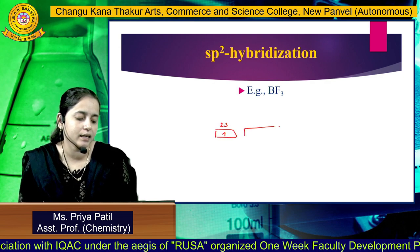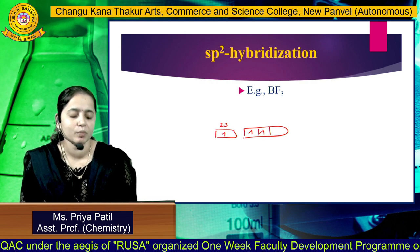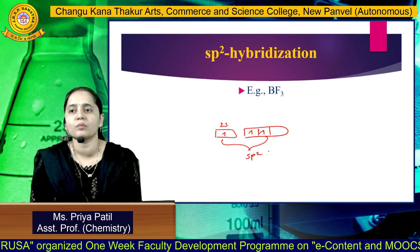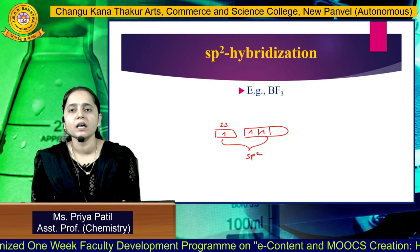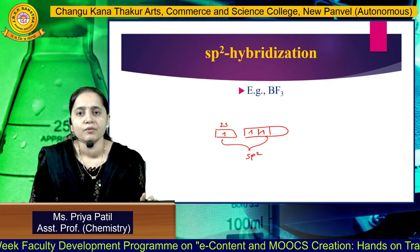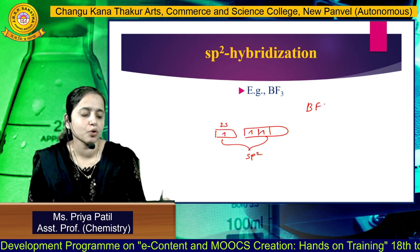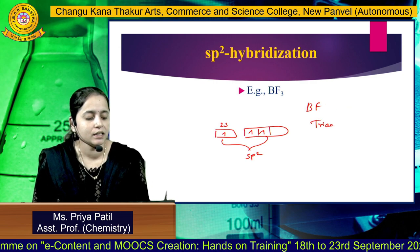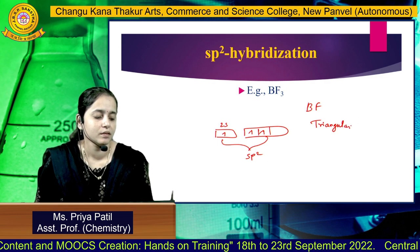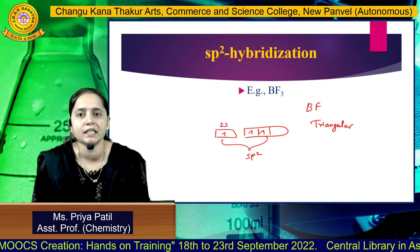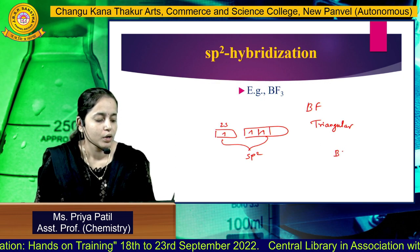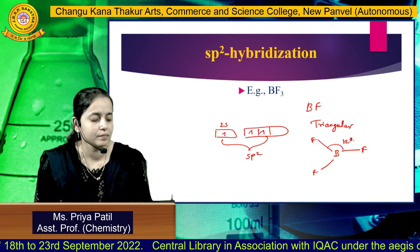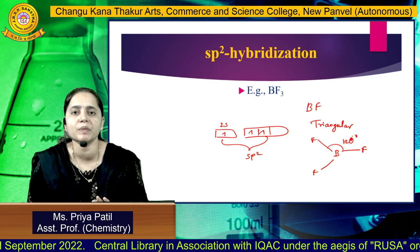One electron is present in 2S and 2 electrons are present in the P orbital. These 3 orbitals get mixed and form SP2 hybrid orbitals. These 3 hybrid orbitals get overlapped with 1 electron each from the 3 fluorine atoms. BF3 will show a triangular planar shape as it has SP2 hybridization, and all 3 bonds are equilateral, showing a 120-degree angle between them. This is about SP2 hybridization.